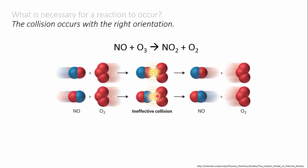However if the nitrogen of the NO collides with an end oxygen on the ozone then the oxygen can break off the ozone and join on to the NO giving NO2 and then we have a successful reaction.